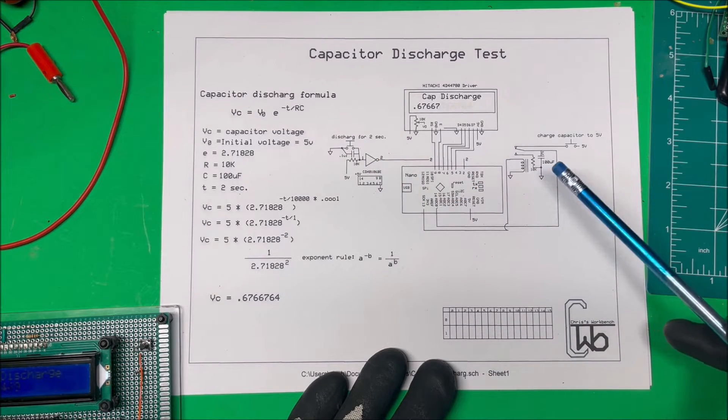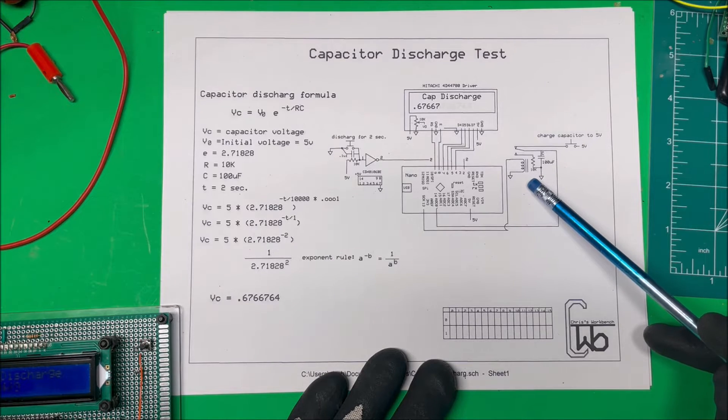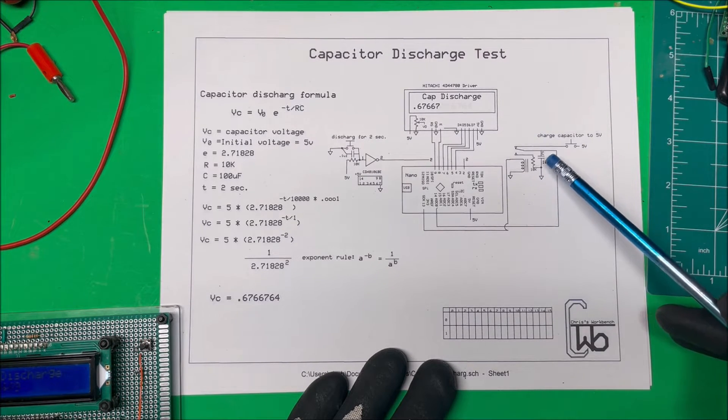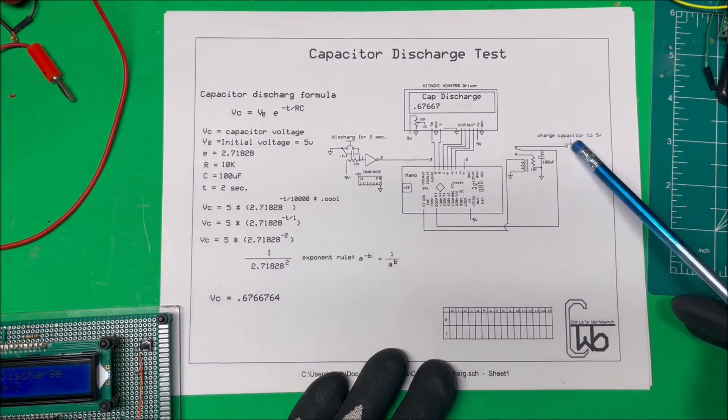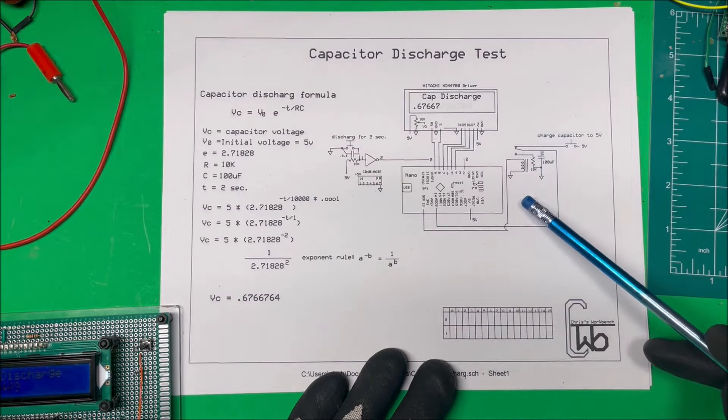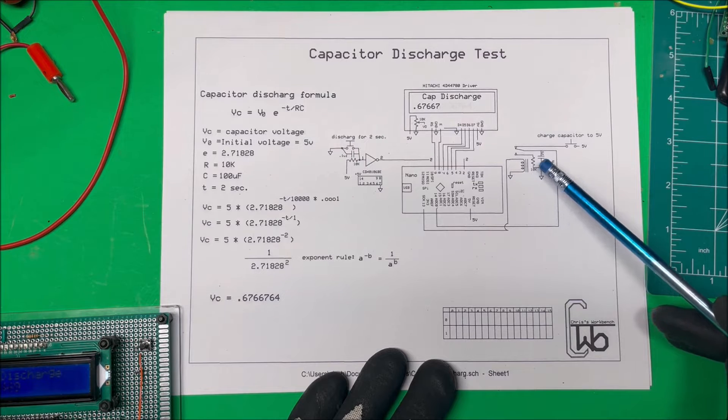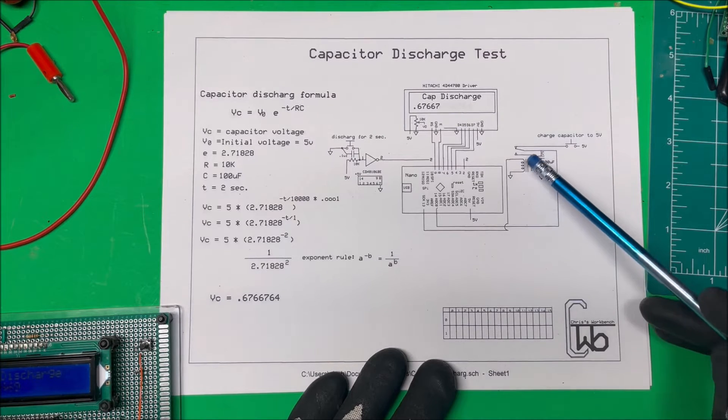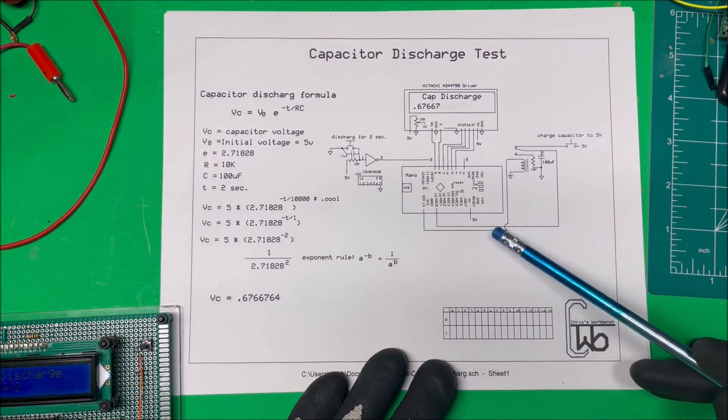And I'm using a relay because if you use a transistor or a MOSFET, as soon as you start charging the capacitor, it's going to start bleeding through the transistor and start losing voltage. So I'm using a relay for that.